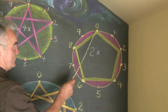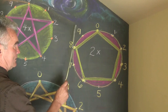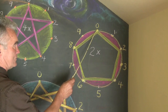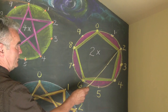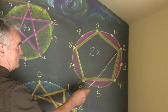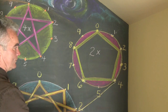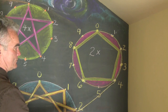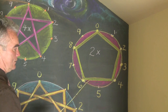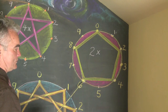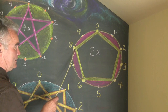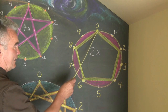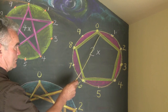This circle shows the two times tables. So if we start here at zero, go over to two: one times two is two, two times two is four, three times two is six, four times two is eight, and five times two is ten.